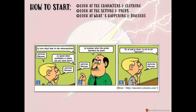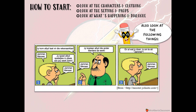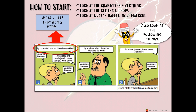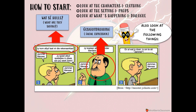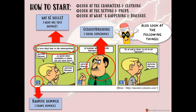So how do we start? You have to look at the characters and their clothing, the setting and the props, and what's happening and the dialogue — so what are they saying? What are their facial expressions? They will always ask you about facial expressions. Make sure you see a frame number and look at your source. These comic strips you would normally find in your exam paper at question three-ish. It is part of your language, so be careful — even though you have a visual in your comprehension section, they still throw in comprehension-type questions within your language.